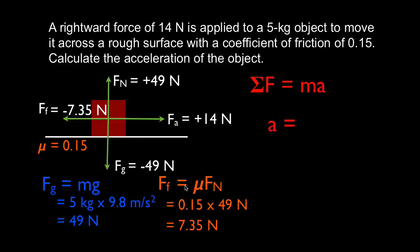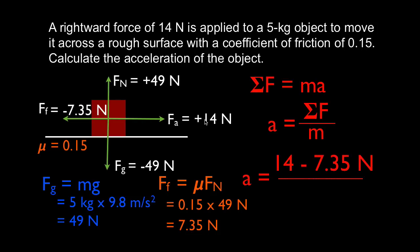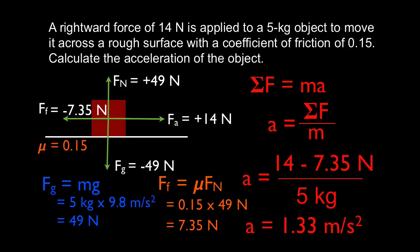Now we've got all the forces drawn, labeled, and calculated, so we can use Newton's second law. Acceleration equals the sum of the forces divided by the mass. We have two forces in the horizontal direction: plus 14, plus minus 7.35, which is 14 minus 7.35, divided by the mass of 5. We get a positive value of 1.33 meters per second squared. So the object is accelerating to the right at 1.33 meters per second squared.